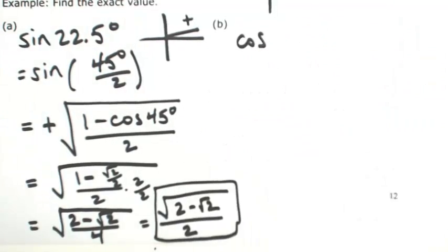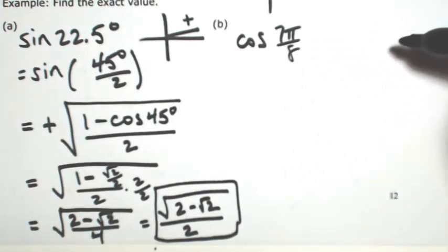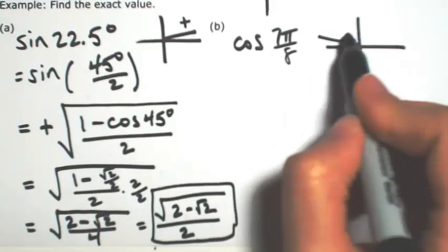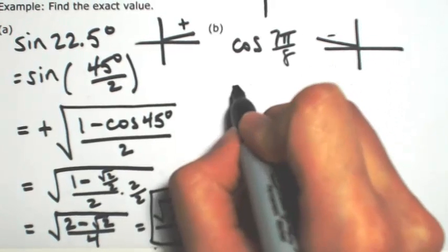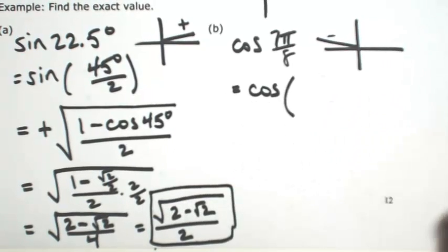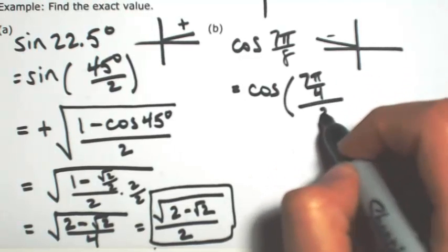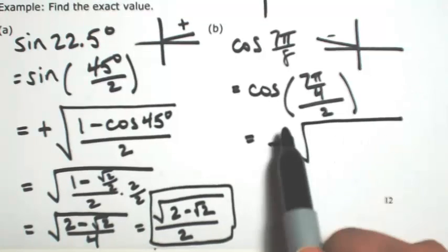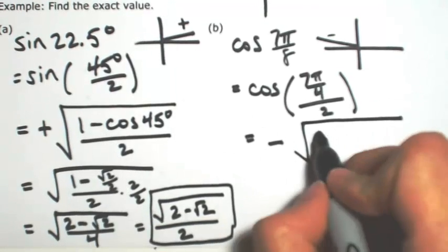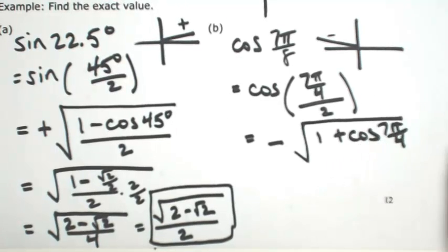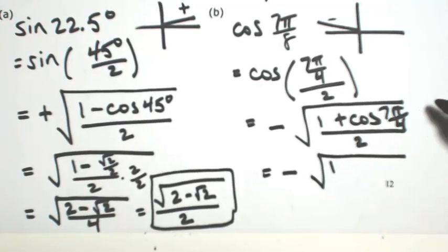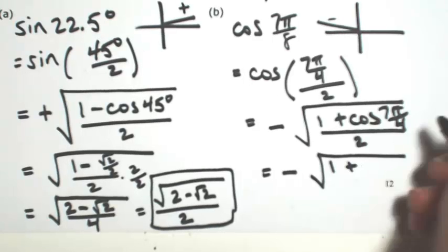Let's do one more with cosine, and also put it in radians: cosine of 7 pi over 8. Before continuing, let me draw this angle. 7 pi over 8 is 7/8 of pi, so it's in the second quadrant, which means cosine — the x-coordinate — is going to be negative. Now, what is 7 pi over 8 half of? Multiply by 2 to get 7 pi over 4. So 7 pi over 8 equals 7 pi over 4 divided by 2. The result is negative. For cosine, instead of subtracting, we use plus: so it's negative times the square root of 1 plus cosine of 7 pi over 4, divided by 2. The cosine of 7 pi over 4 is in the fourth quadrant, so it's positive: square root of 2 over 2.